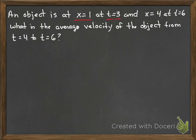An object is at x equals 1 at time equals 3 and x equals 4 at time equals 6. What is the average velocity of the object from t equals 4 to 6? In this case we're looking for the